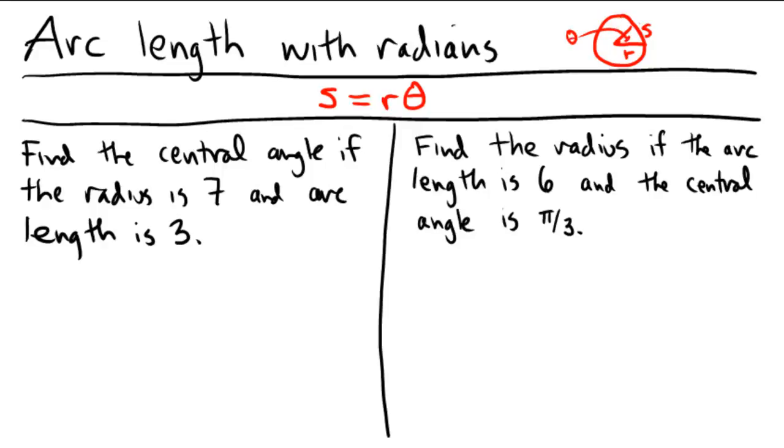So radius, theta, and then the length of the arc of the circle. So typically I like to do these ones using a ratio technique, but with radian mode, it's actually just easier to think of the formula s equals r theta because it's so simple.